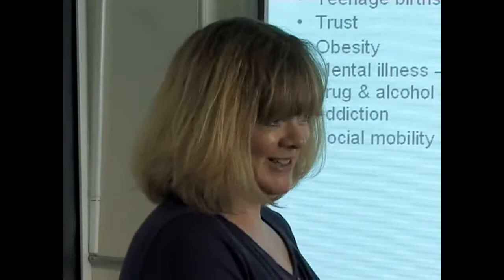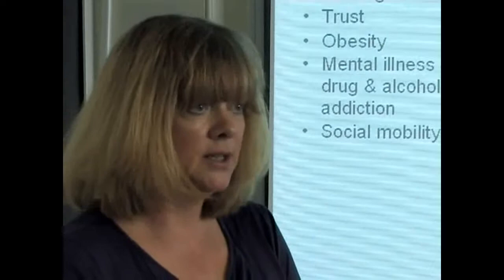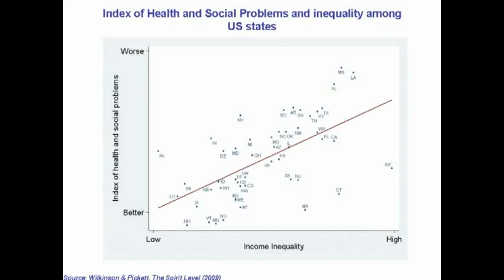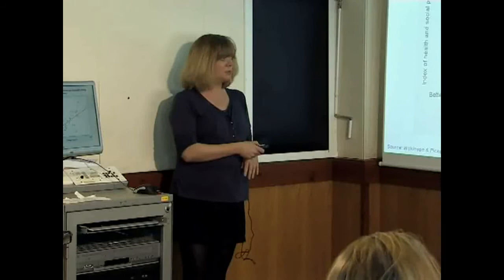You might say we picked those countries to show what we want to show, so we've done the same thing in what we think of as an independent test bed. We've created an index for the 50 states of the USA, including pretty much the same things — health, obesity, educational performance, etc. Up here are states that are doing worse: Mississippi, Louisiana, Alabama. Down here we've got states doing much better: Utah, New Hampshire, Vermont, Iowa. Again, relating them to income inequality within each state, we find a close, significant relationship — more health and social problems in more unequal states.